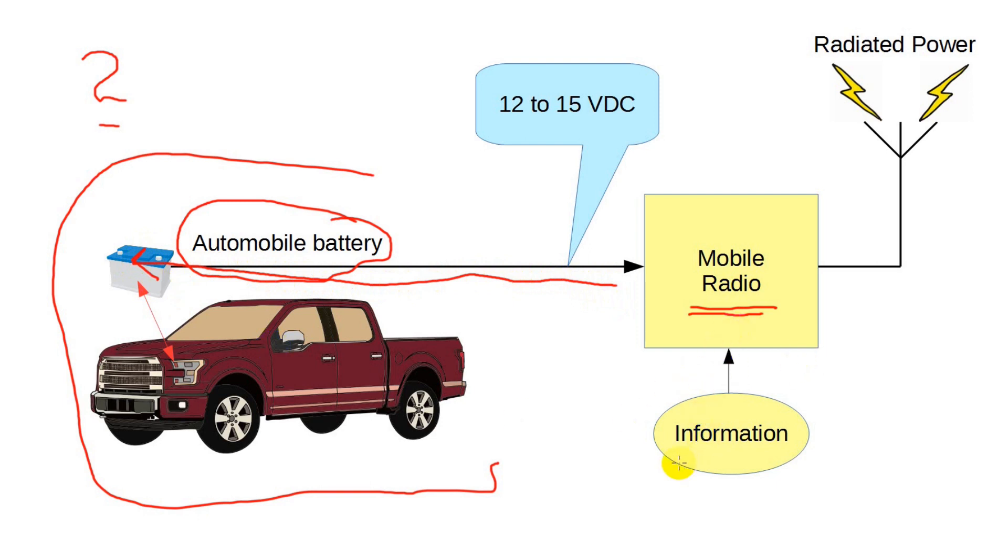One issue is electrical noise on the power leads, which is why we want to go from the radio directly to the battery. Another issue is the rather variable DC voltage, which can be as low as 12 volts and as high as 15 or 16 volts. Mobile rigs are designed with this in mind.